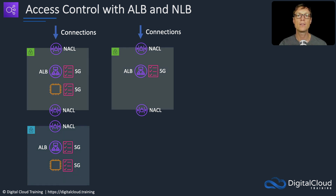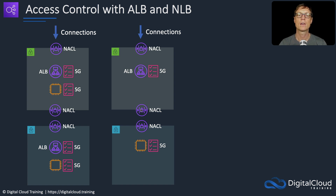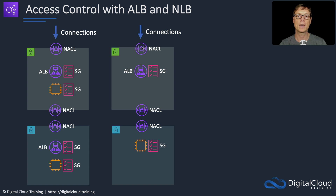The ALB has a security group, connections are coming in, NACLs process traffic in and out of the subnet, and there's a private subnet with its own NACL and a security group on the instance. The ALB is public-facing with a public IP and forwards data straight to instances in a private subnet. You need to specify the public subnet in the ALB that corresponds to the same availability zone as the private subnet. This gives you filtering at many layers: the NACL into the ALB, the security group out of the ALB, the NACL into the private subnet, and the security group on the instance.